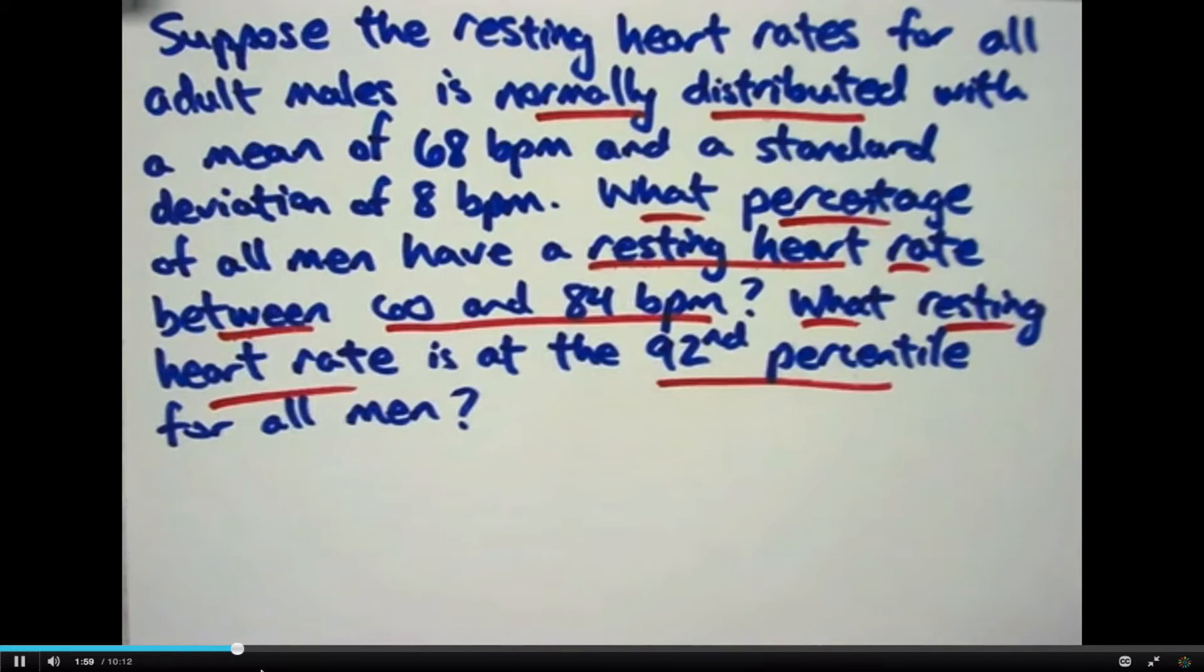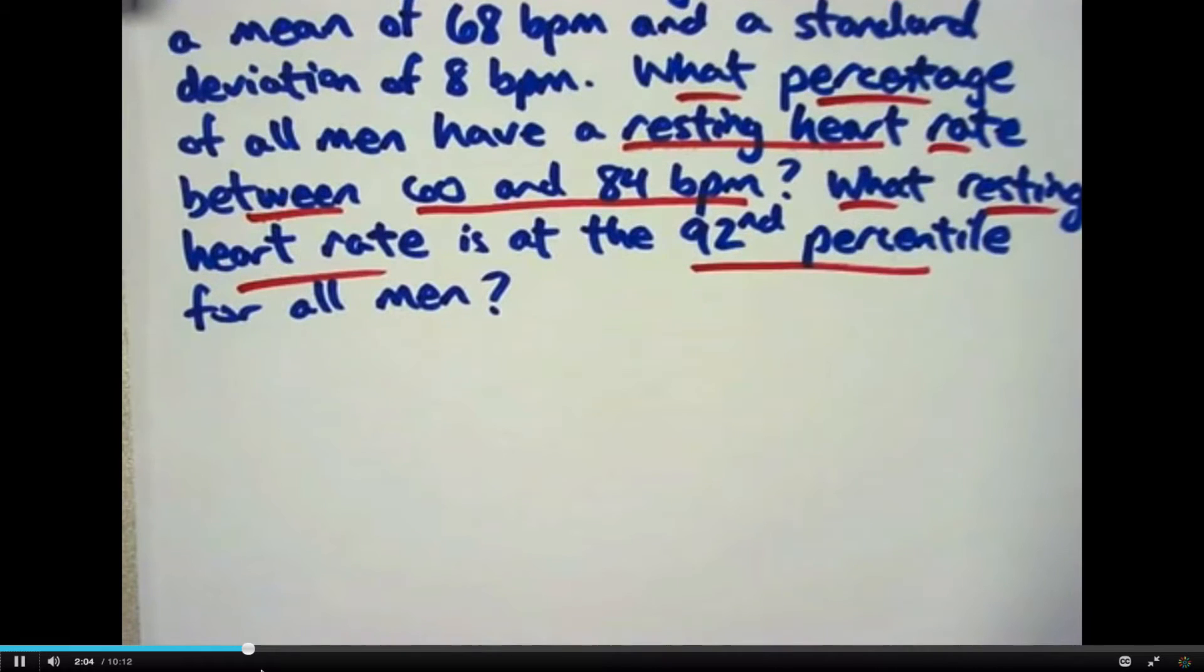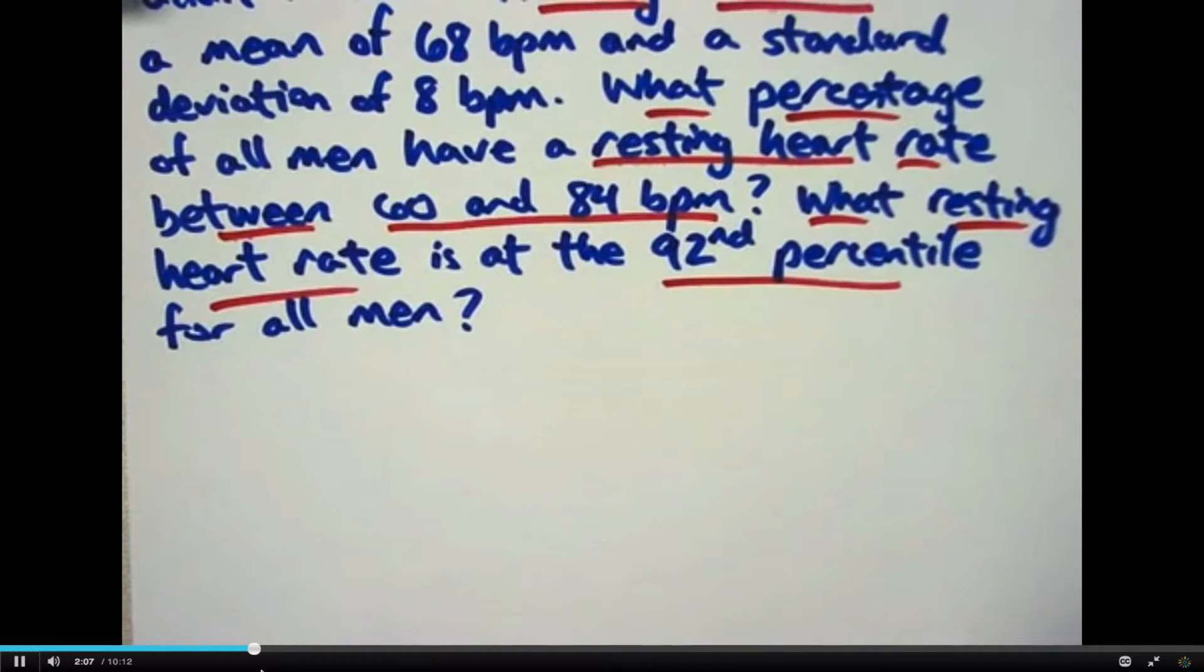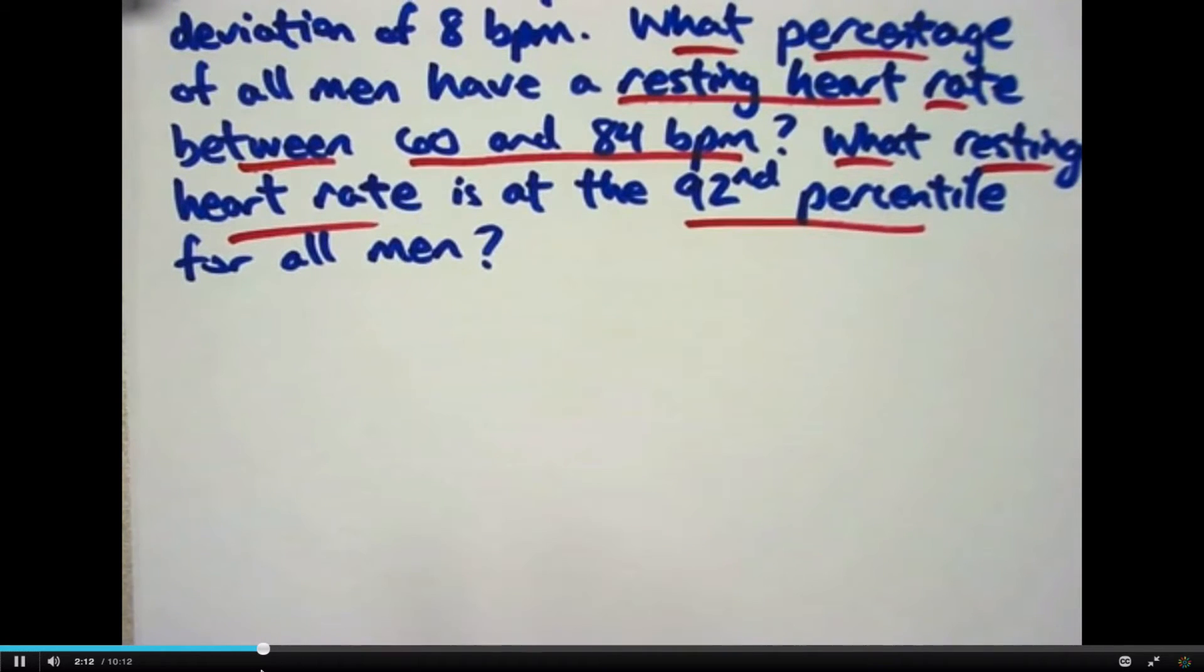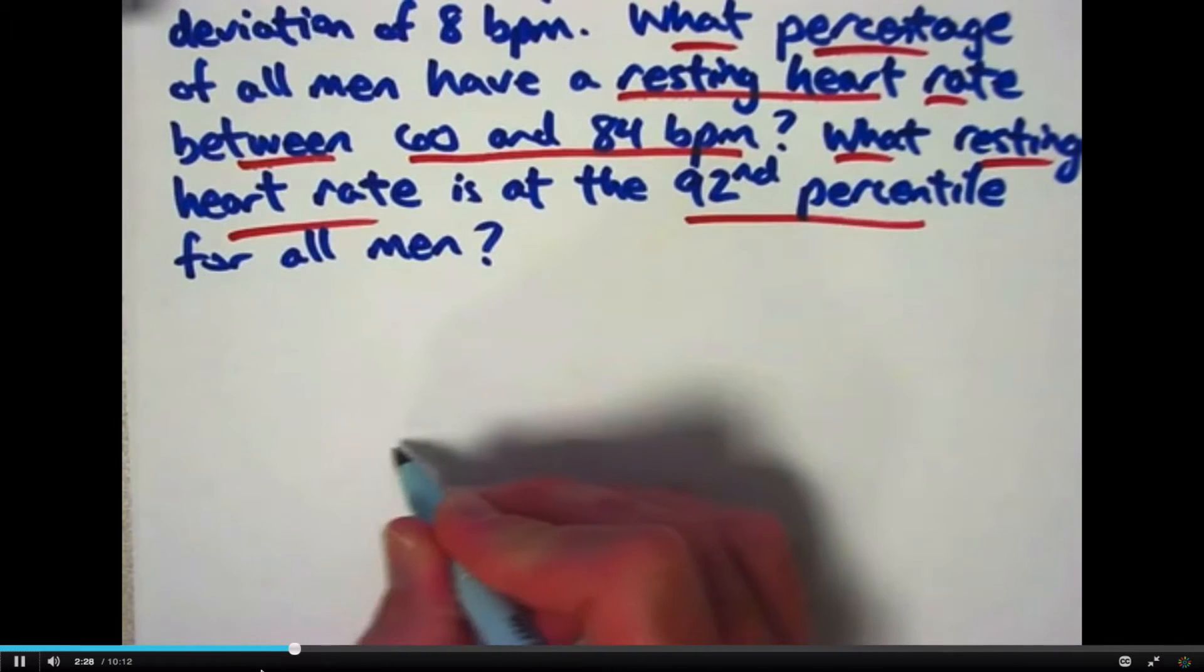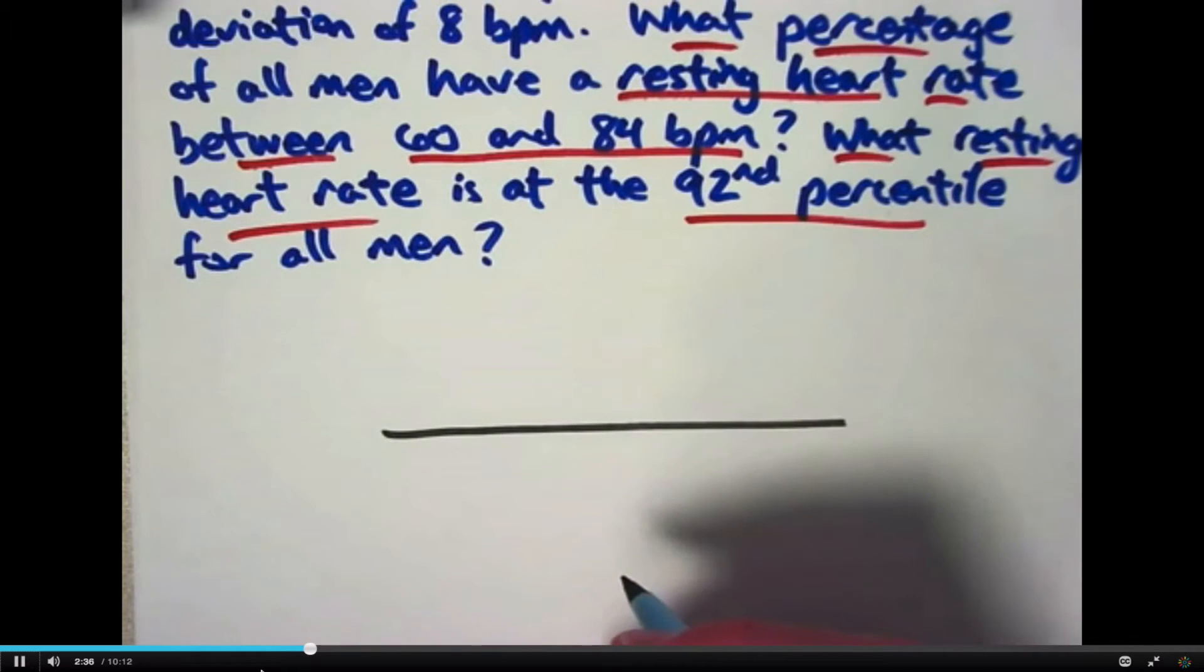All right. So how do we think about this problem? That's what we're going to focus on in this video is how to think about it. What you need to do is you need to use your imagination. Now there's probably billions of adult males in the entire world and millions in the United States. What you need to imagine is that somehow you've gotten a database with all of their resting heart rates in it somehow. So you've got say billions of numbers.